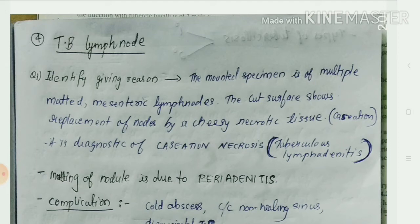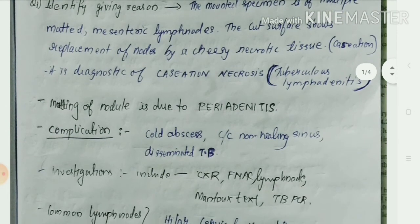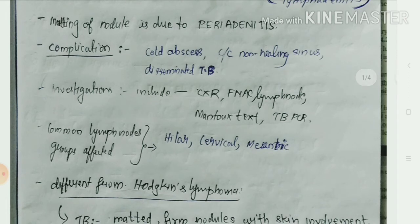The complications include cold abscess, chronic non-healing sinuses, and disseminated TB. Investigations that can be made include chest X-ray, FNAC (fine needle aspiration cytology) of the lymph node, Mantoux test, and TB PCR, among others, to diagnose tuberculosis.